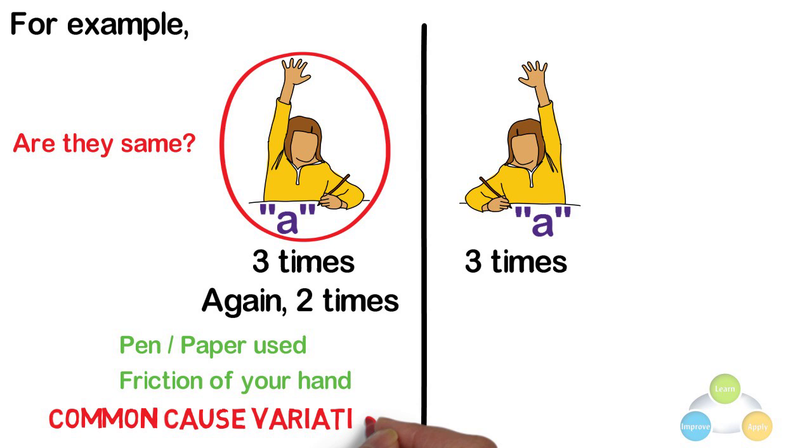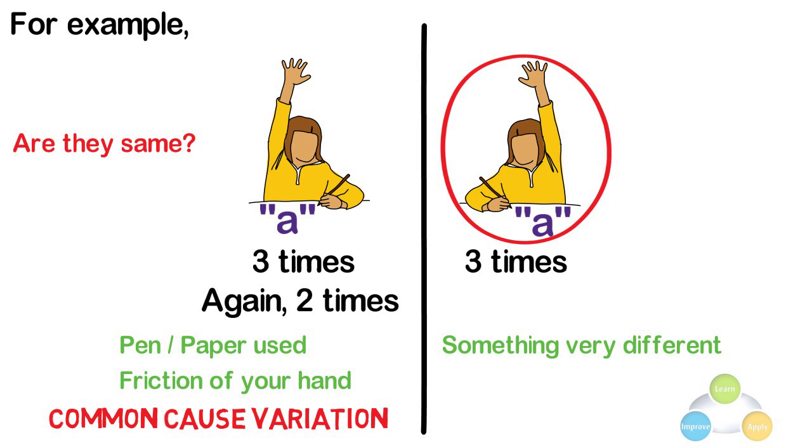Using the non-dominant hand clearly shows something very different. This is a Special Cause. It does not always happen in the process of writing.